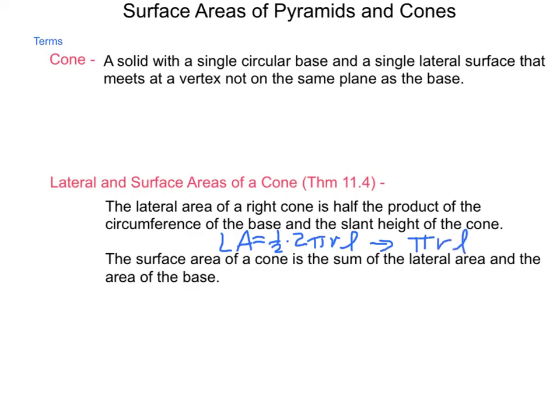Now for our surface area, the surface area of a cone is the sum of the lateral area and the area of the base. So it's that lateral area of pi r l plus the area of the circle, which is pi r squared. We can apply these into finding surface areas of different cones just as we had the proper formulas for a pyramid.